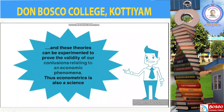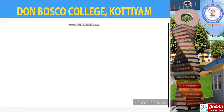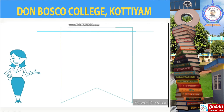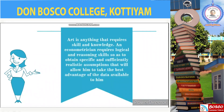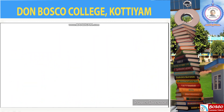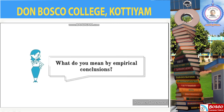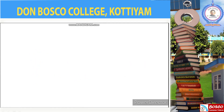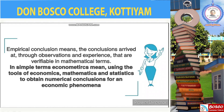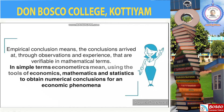So we can call econometrics a science. Now how does it become an art? An art is anything that requires skill and knowledge. In econometrics, an econometrician requires logical and reasoning skills so as to obtain specific and sufficiently realistic assumptions that will allow him to take the best advantage of the data available. Empirical conclusions means conclusions arrived at through observation or experience that are verifiable in mathematical terms. In simple terms, econometrics means using tools of mathematics, economics, and statistics to obtain numerical results for an economic phenomenon.